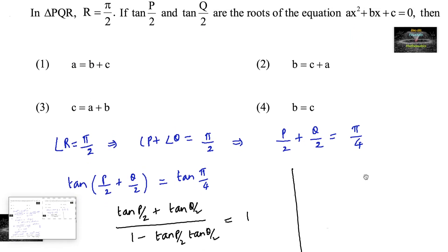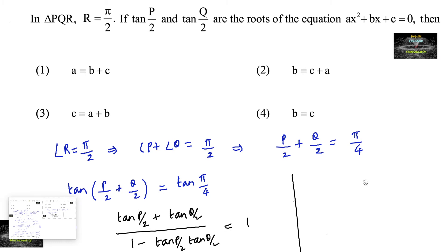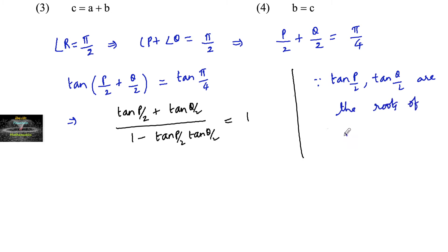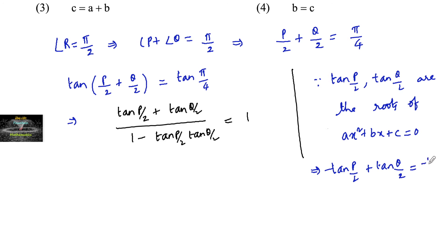Since tan(P/2) and tan(Q/2) are the roots of ax² + bx + c = 0, by Vieta's formulas: the sum of the roots, tan(P/2) + tan(Q/2), is equal to −b/a, and the product of the roots, tan(P/2) · tan(Q/2), is equal to c/a.